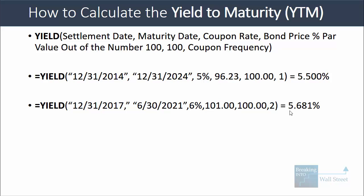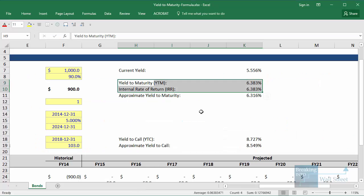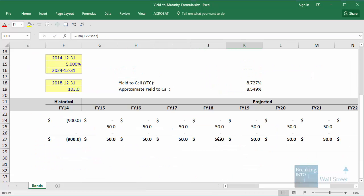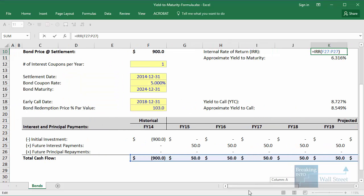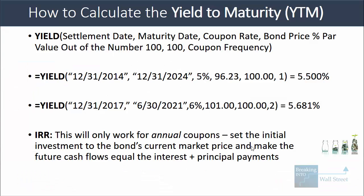I have another example here with slightly different numbers. Another method — rather than using the YIELD function — is to use the IRR function by projecting all the cash flows. The downside is that this only works cleanly with annual periods and annual coupons. If you have semi-annual or quarterly coupons, the numbers will be slightly different and you'll need to modify the approach. We're not going to get into that here because we're focused on the quick approximation.